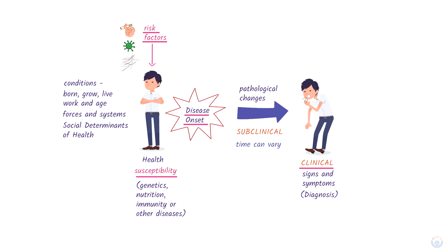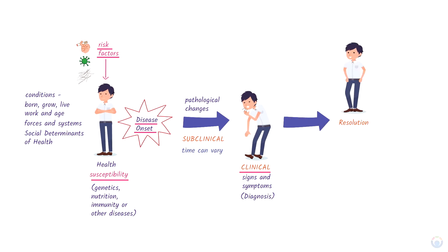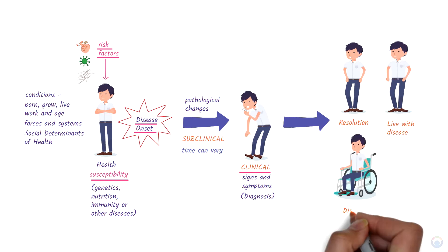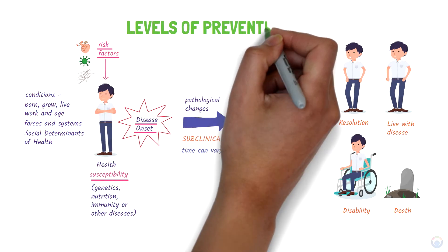A few things could happen after the clinical stage. The disease can resolve, either on its own or because of an intervention such as taking medication or having surgery. The person can continue to live with the disease, it may lead to a disability such as the inability to walk, and sometimes a person can die. Now that we've gone through the natural history of a disease, let's have a look at the different levels of prevention.